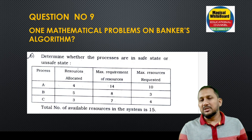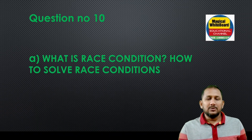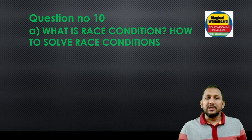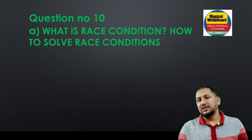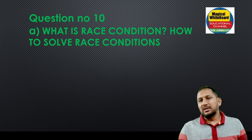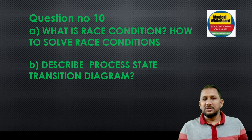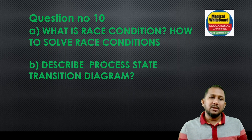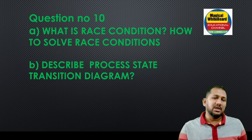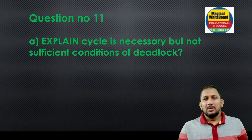Question number ten: what is a race condition and how do you solve it? Race condition can be solved using synchronization mechanisms. This belongs to the process management chapter. Also cover: process state and transition diagram.